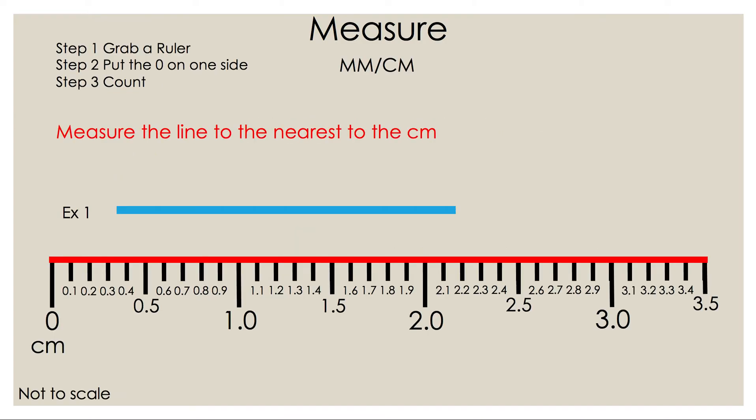So let's take a look at the steps on how to measure something with a ruler. Step one, grab a ruler. Step two, put the zero on one side. Step three, count. Let's read the question to make sure we know what to do. Measure the line to the nearest centimeter.